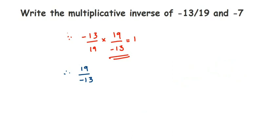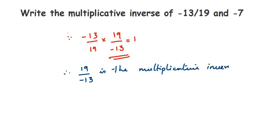So to conclude: 19 by minus 13 is the multiplicative inverse of minus 13 by 19.